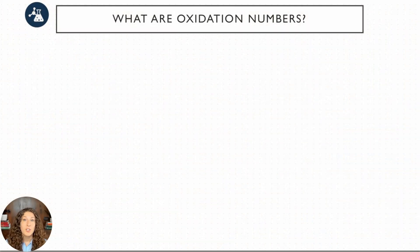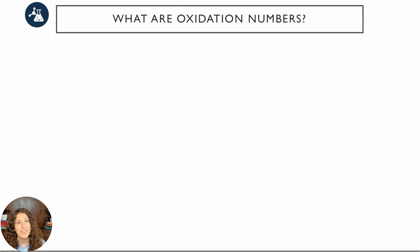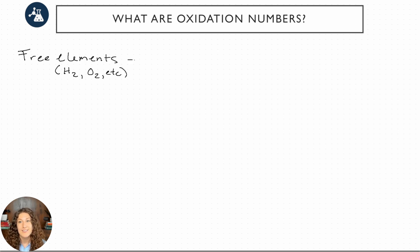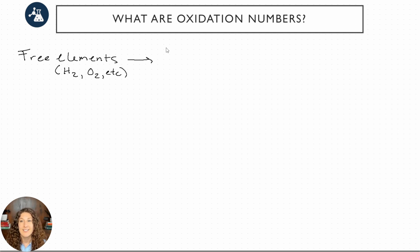Let's go through the various rules and then we'll do a practice example together. In order to use oxidation numbers, we need to follow a series of rules for how we assign each number to a given atom in a compound. The first rule covers free elements — things like hydrogen gas or oxygen gas. Any free elements that are just by themselves, not in a compound other than with themselves, all get assigned an oxidation number of zero.